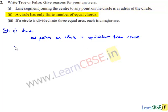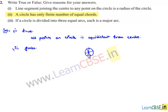Moving on to the second bit: a circle has only a finite number of equal chords. That is false. For example, if we consider a circle, a chord passing through the center is the diameter. Since a circle has an infinite number of points on it, we can draw an infinite number of chords passing through the center. Therefore, we cannot say there will be a finite number of chords of equal length on the circle.